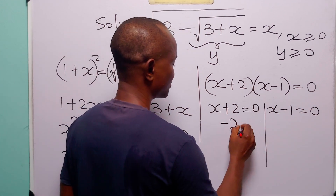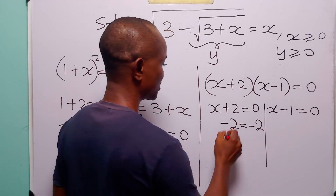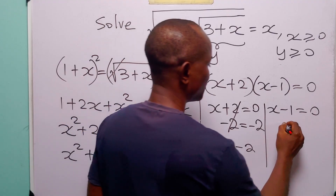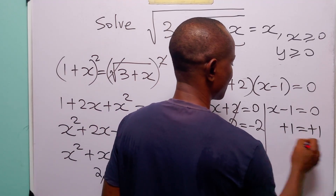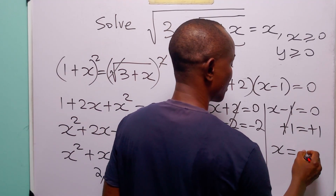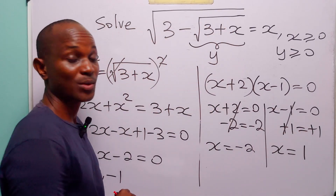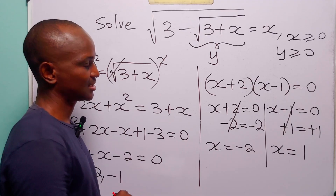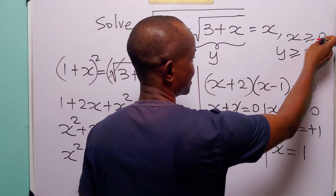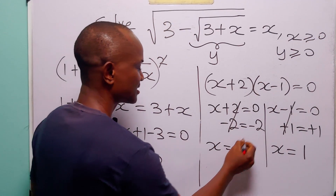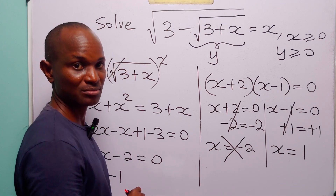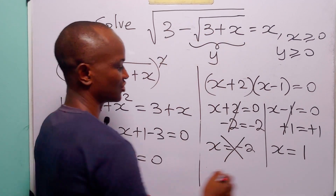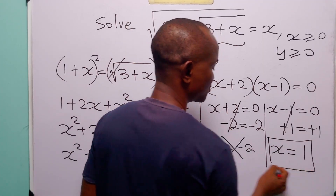When we subtract 2 from both sides of the first factor, we have that x is equal to minus 2. And when we add 1 to both sides of the second factor, we have that x is equal to 1. Now we have found two values of x. But since x must be positive, the value x equals minus 2 is unacceptable. So the only value of x that satisfies this radical equation is x equal to 1.